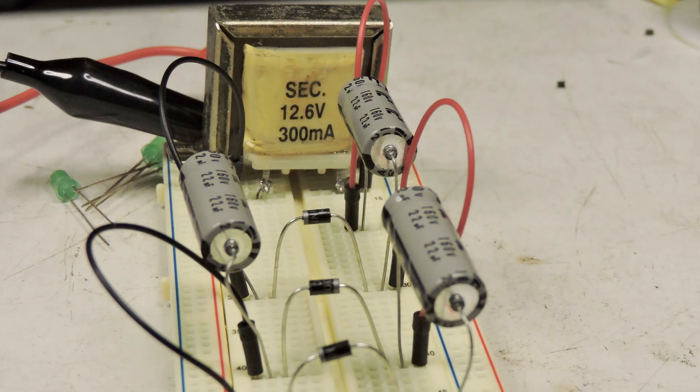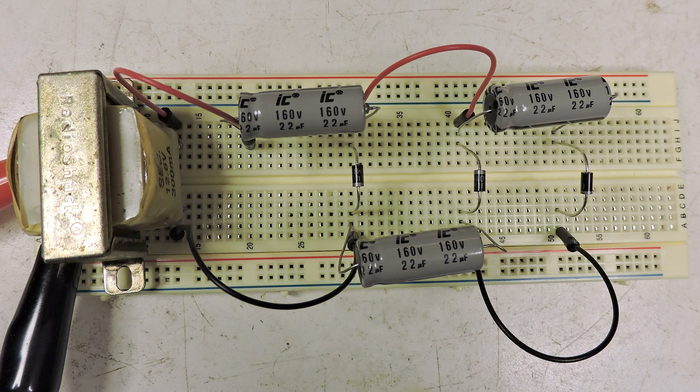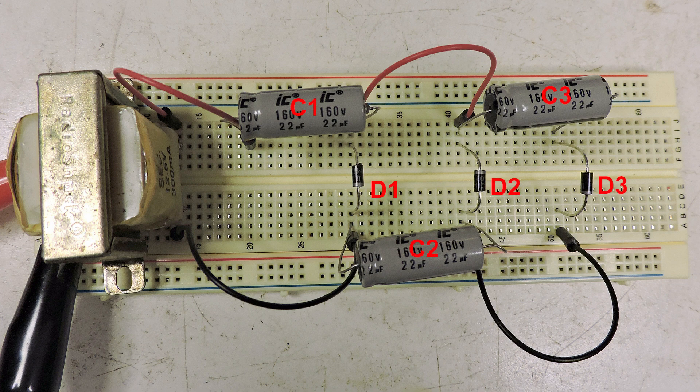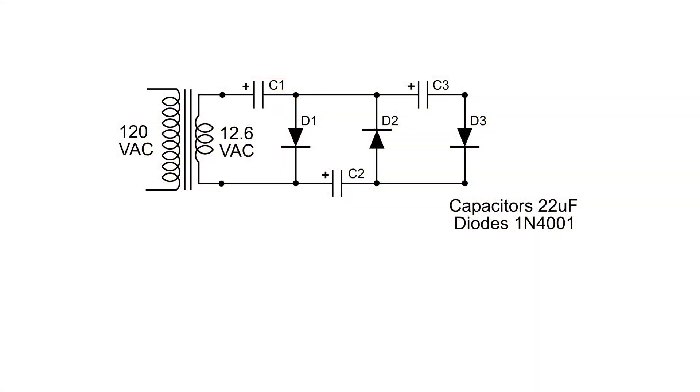Here's the build for that voltage tripler circuit, an overhead view. Here I have labeled the components. This is the wiring diagram of this tripler circuit. Let's take a look at the first positive phase from the secondary of that transformer.